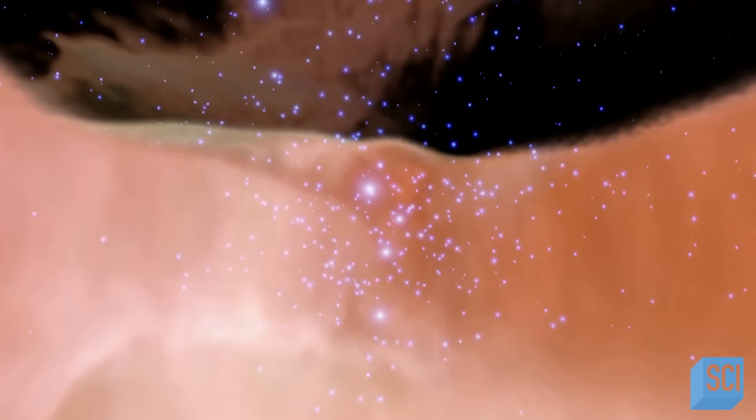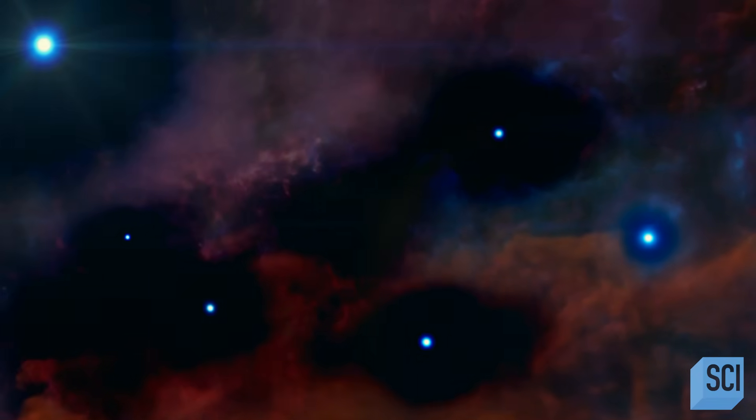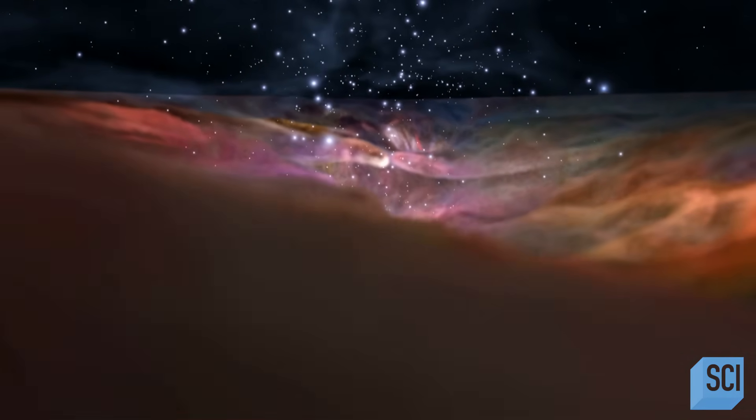At Orion's heart lies a cluster of young stars. Together, they blast out charged particles and solar winds, blowing open a gap at the center, creating a window inside.